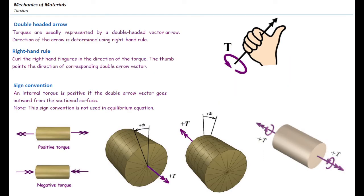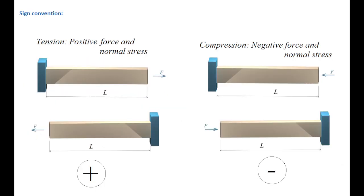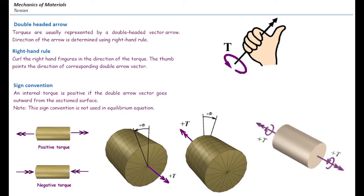We do care about the sign of torque when adding up deformations or twists. For axially loaded elements, tensile force is positive and compressive force is negative. For torsional elements, we use the right-hand rule and the double arrow. Torque is a type of moment, and we replace it with a double arrow to make it more visible in two-dimensional problems. The rule: curl your fingers toward the direction of rotation, and the thumb shows the direction of the equivalent double arrow.